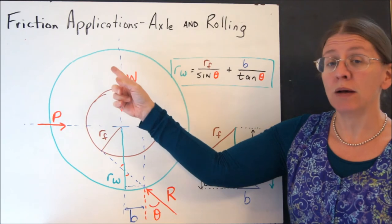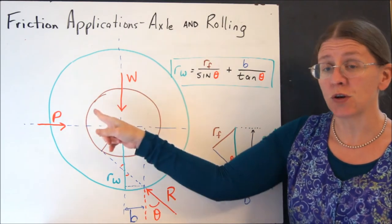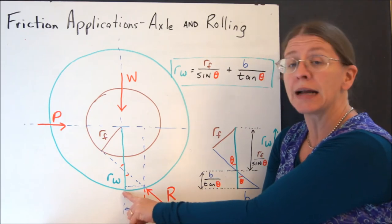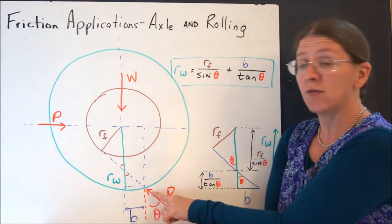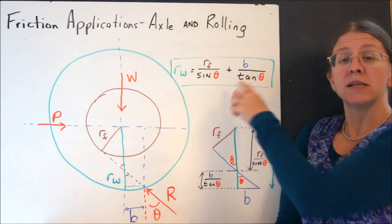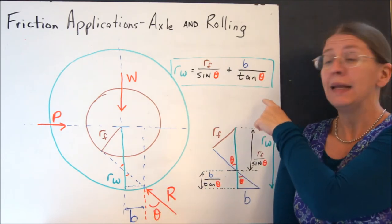In this case, here's my wheel. There's my friction circle. R is tangent to the friction circle and does not act immediately under the weight, but offset at a distance. Once you have those three facts, you can derive this formula easily.